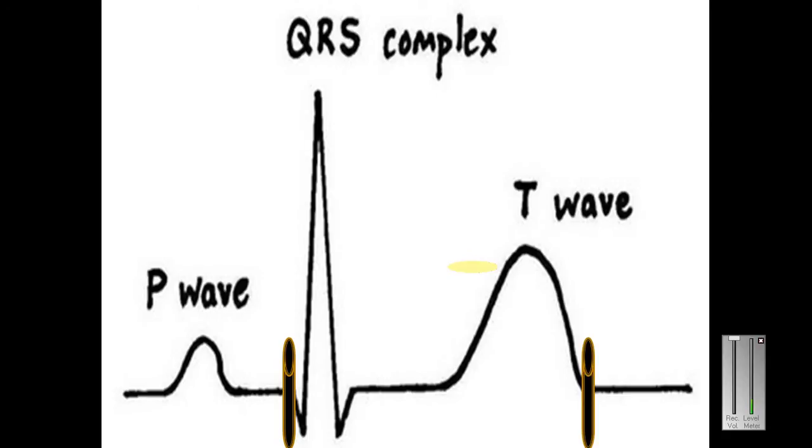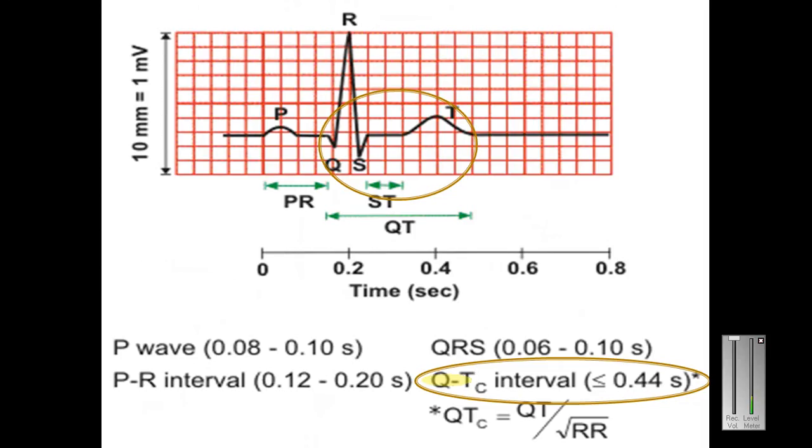What is QT interval? QT interval is the duration from the beginning of the Q wave to the end of the T wave. QRS complex means ventricular depolarization, then T wave is ventricular repolarization. This is the duration in which ventricles are contracting from the beginning of Q wave till the end of T wave.